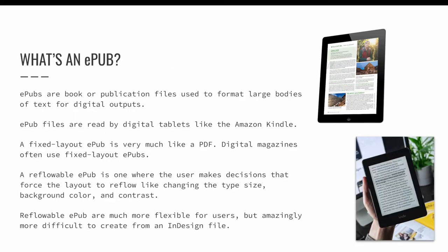We have not yet learned about fixed layout and reflowable EPUBs, so let's take a minute to understand what they are and where they are used. An EPUB is an electronic publication — book or publication files used to format large bodies of text for digital outputs. EPUB files are the format read by digital tablets like the Amazon Kindle. A fixed layout EPUB is very much like a PDF: the design looks just like it would in a PDF, including text and image settings you choose visually in InDesign. Digital magazines often use fixed layout EPUBs. A reflowable EPUB can be controlled by the user — for example, a user can change the typeface size, which changes the amount of text that fits per page, as well as background color, contrast, and other settings.